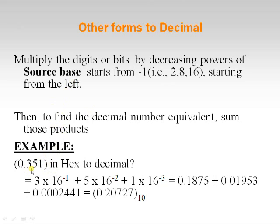For example, 0.351 in hexadecimal to decimal: the source base is 16, so multiply each digit by decreasing powers of 16 — 16^(-1) × 3 + 16^(-2) × 5 + 16^(-3) × 1. Sum all these products to get the resultant decimal value.